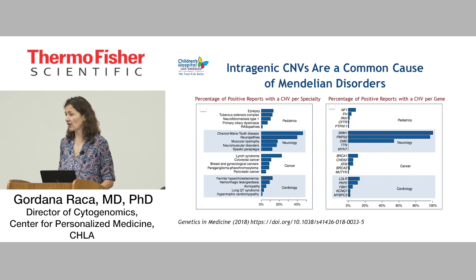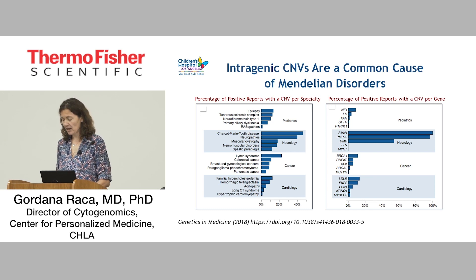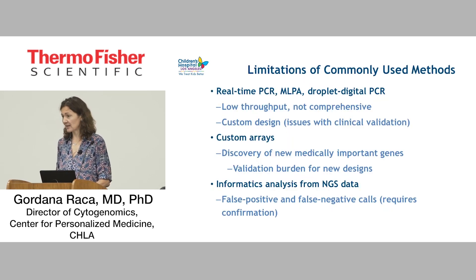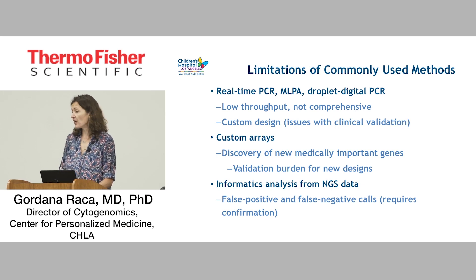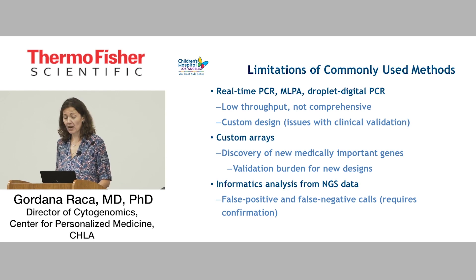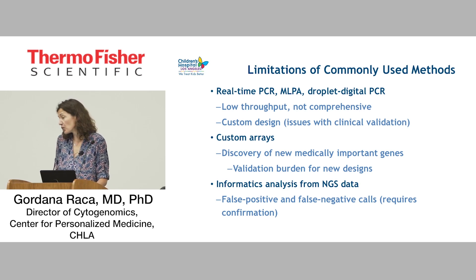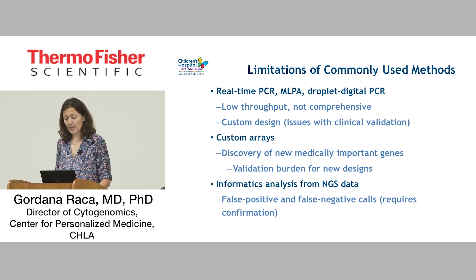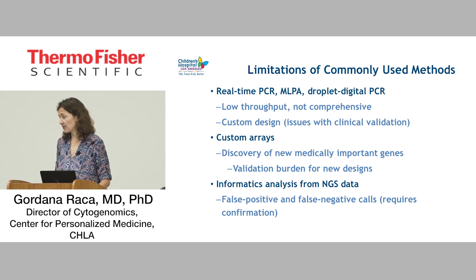Our laboratory was very interested in offering genetic testing in those areas, so we were struggling to come up with an effective way to incorporate partial gene deletion and duplication testing into our workflow. There are very well-established traditional methods that allow you to test for copy number abnormalities, including real-time PCR, MLPA, and droplet digital PCR, but all those are very convenient for single gene testing. They are low-throughput and not comprehensive if you want to do large panels or scale up to exome.